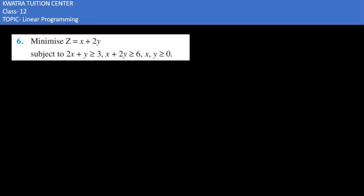So question here, question says minimize z is equal to x plus 2y. So this is our question and here also given this subject to 2x plus y greater than or equal to 3 and x plus 2y greater than or equal to 6 where x and y are greater than or equal to 0.